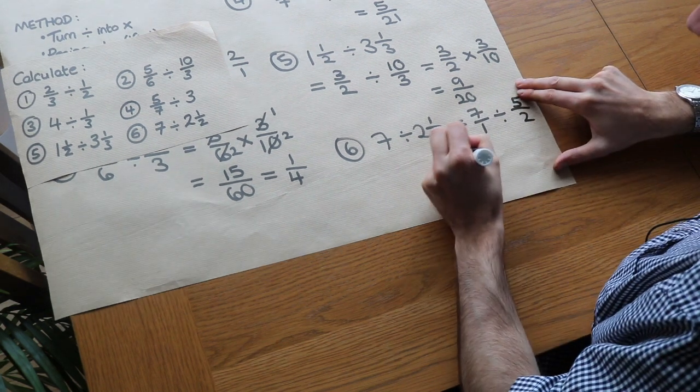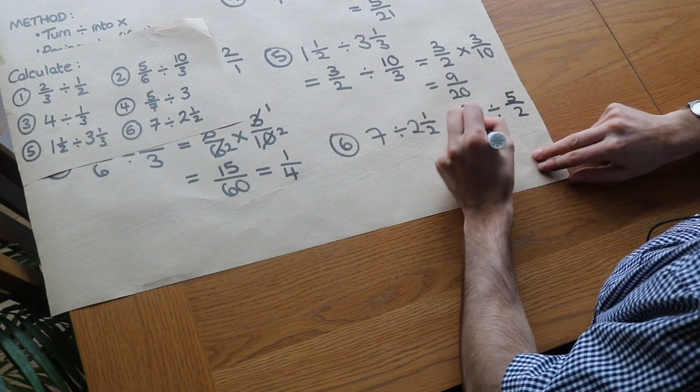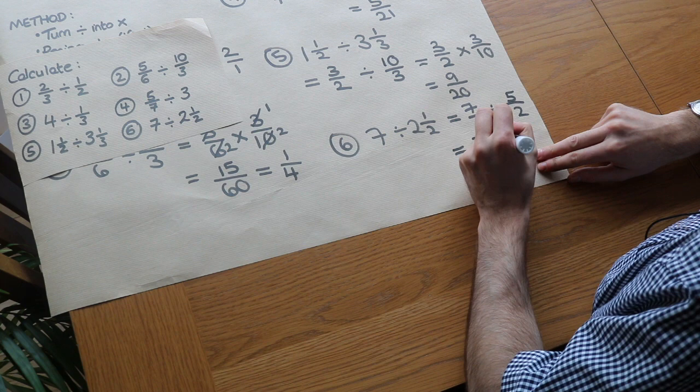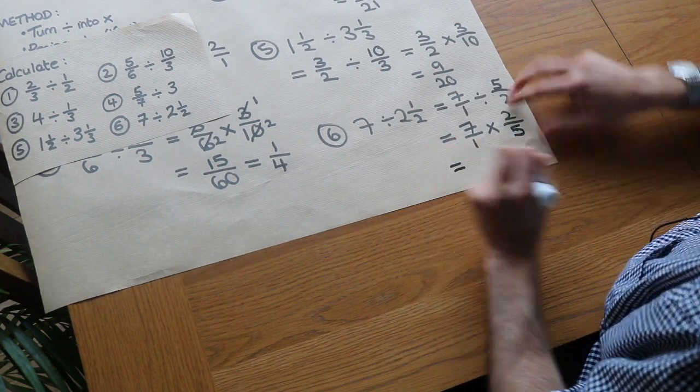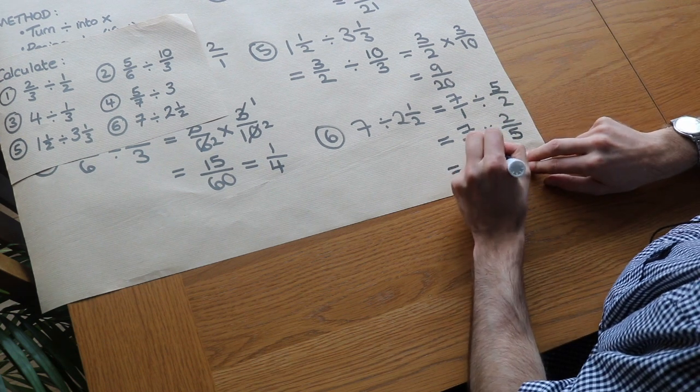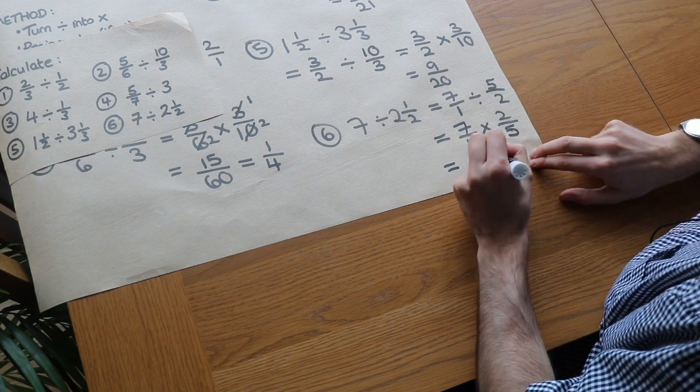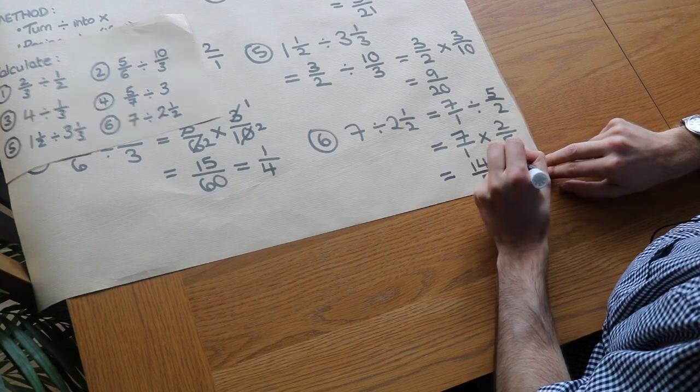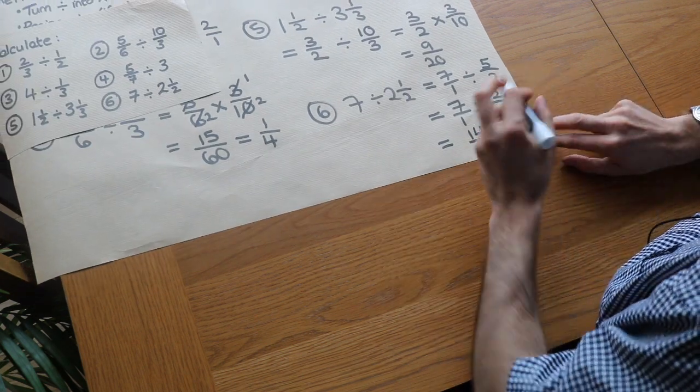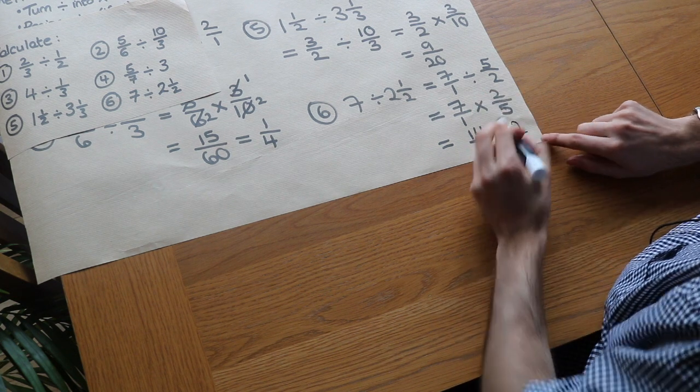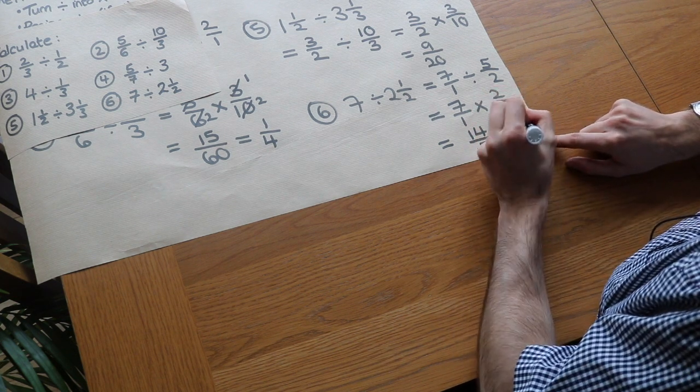At this point I can change this to a times, so it's 7/1 times by 2/5 because we flipped it. Then 7 times 2 is 14, 1 times 5 is 5. If you want to convert that back into a mixed number, well, how many times does 5 go into 14? It goes in twice with remainder 4, so it would be 2 and 4/5.